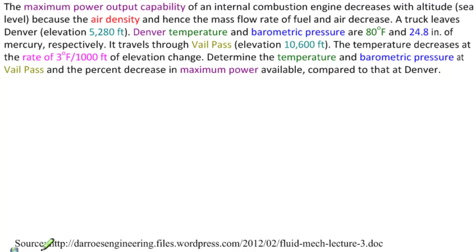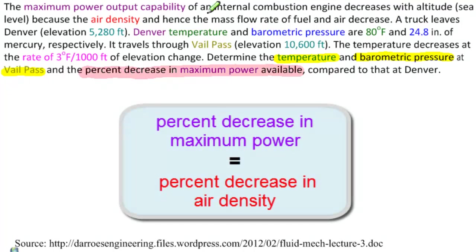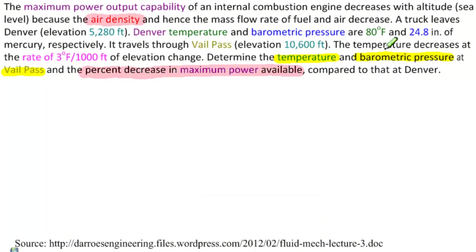This problem is sourced from a URL and believed to be based on a problem from Fox. We need to determine the temperature and barometric pressure at Vail Pass, and also the percent decrease in maximum power available at Vail compared to that at Denver. The maximum power output capability decreases with altitude because the air density decreases, so the percent decrease in maximum power equals the percent decrease in air density. We need the temperature and barometric pressure at Vail Pass and the air density both at Denver and at Vail Pass.